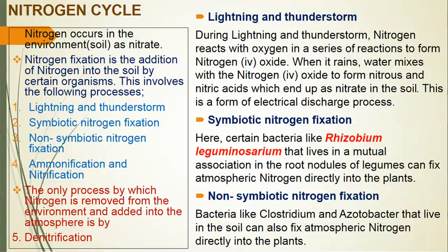Symbiotic nitrogen fixation: certain bacteria like Rhizobium leguminosarum, that live in a mutual association in the root nodules of legumes, can fix atmospheric nitrogen directly into the plants. Non-symbiotic nitrogen fixation: bacteria like Clostridium and Azotobacter, that live in the soil, can also fix atmospheric nitrogen directly into the plants.